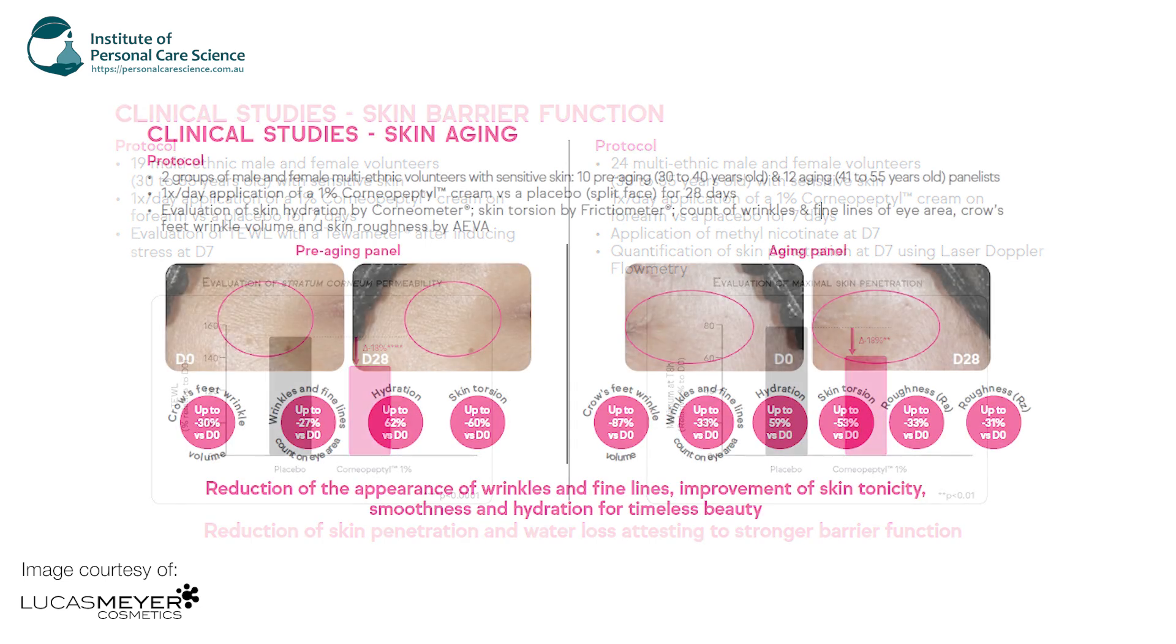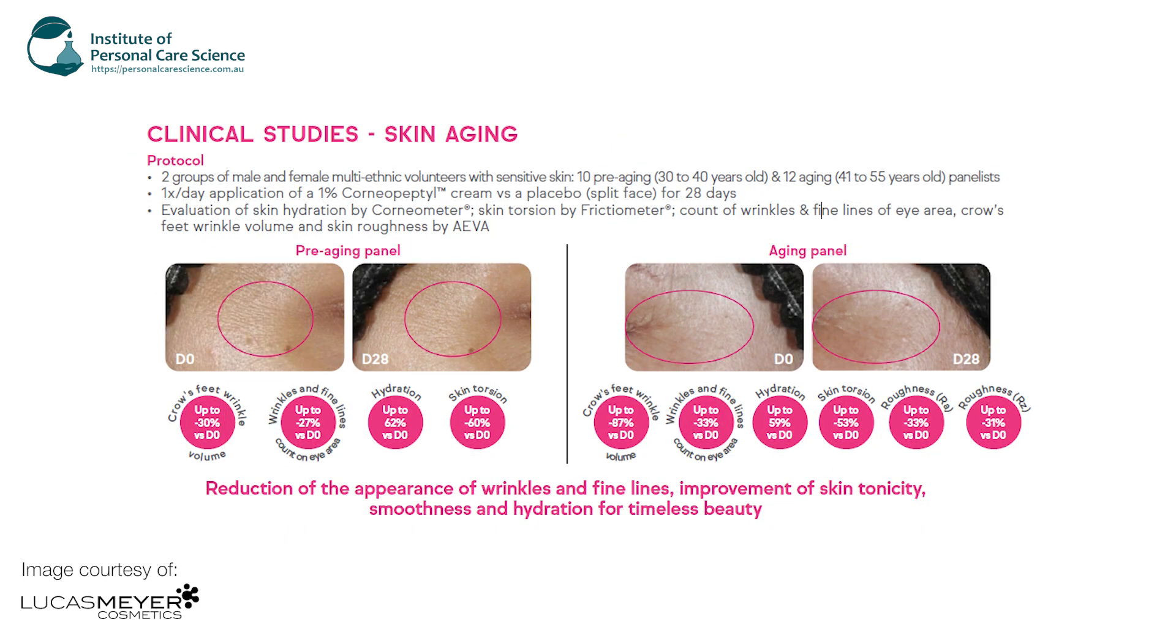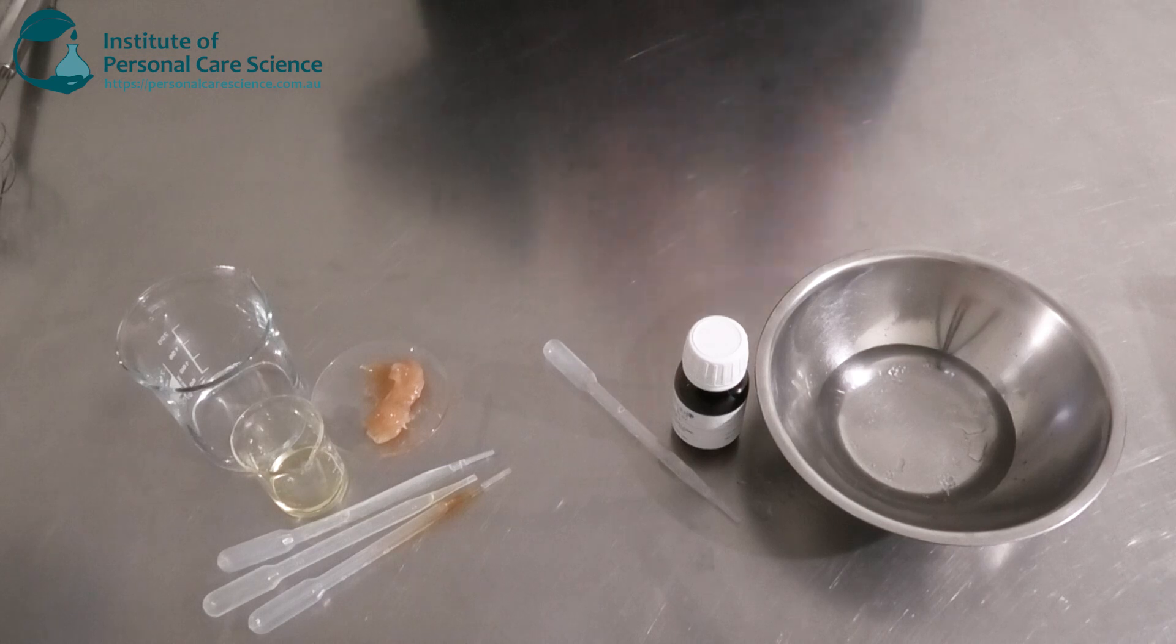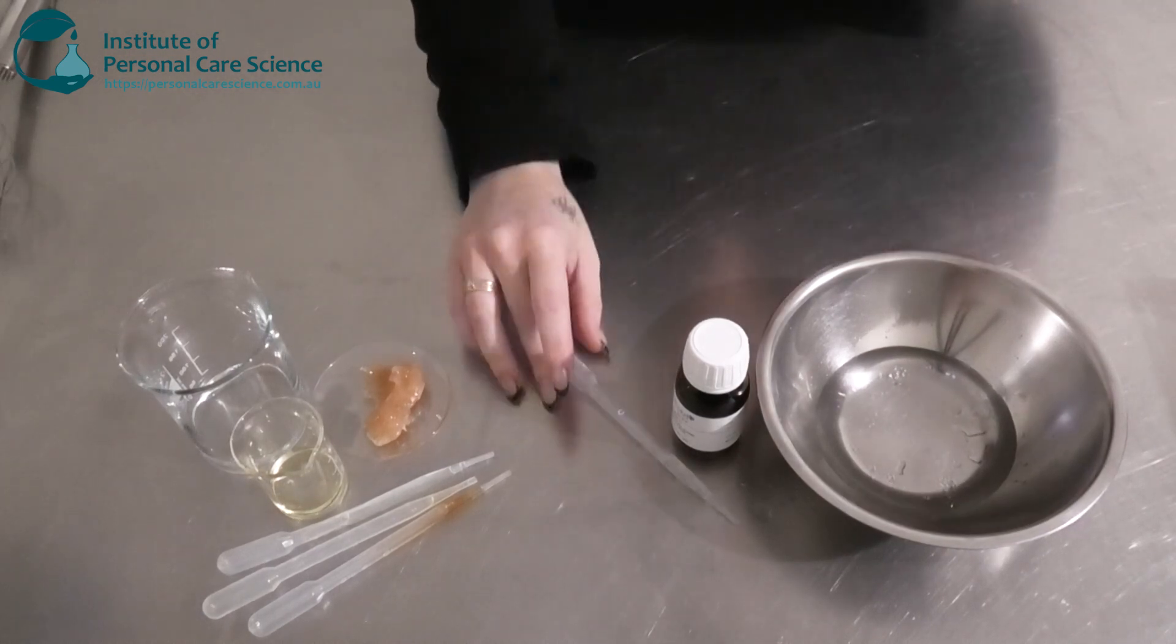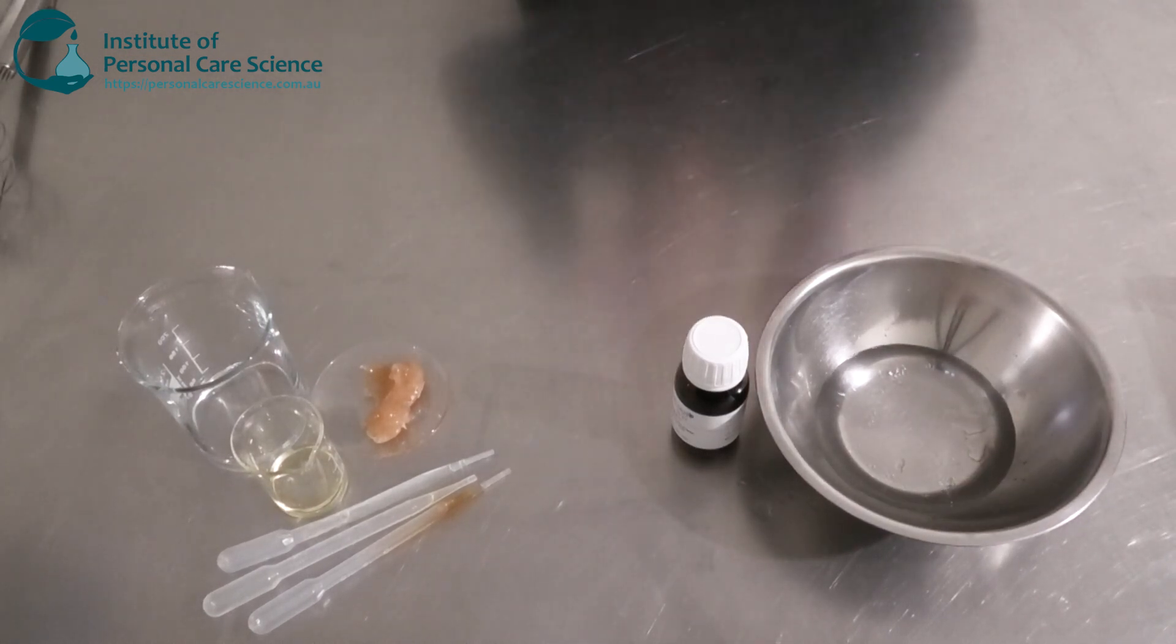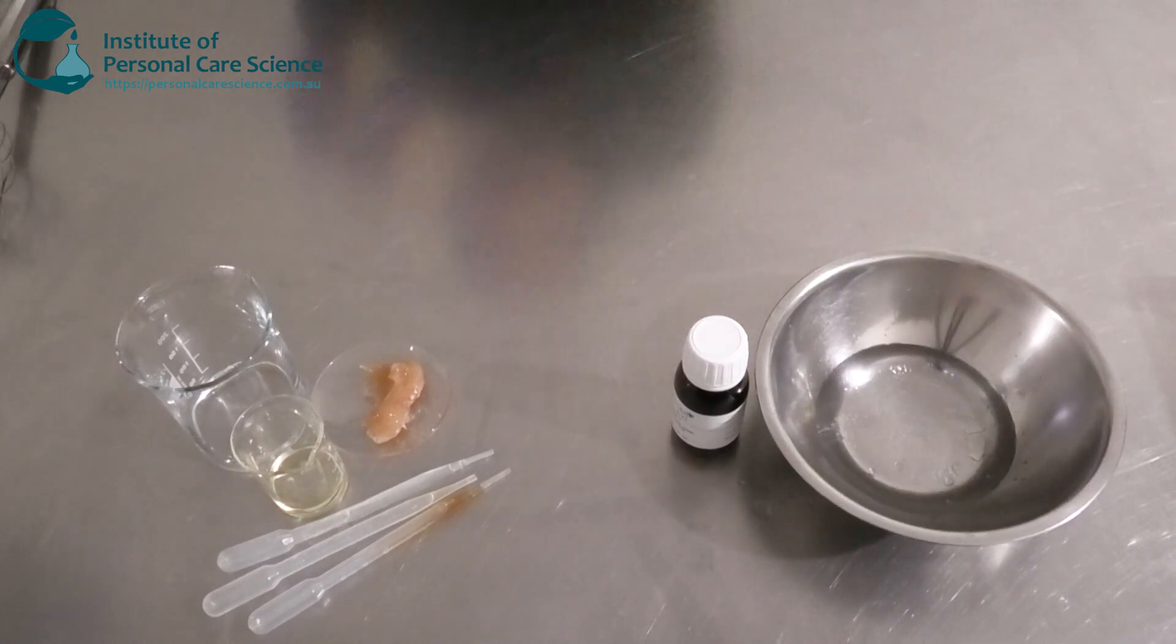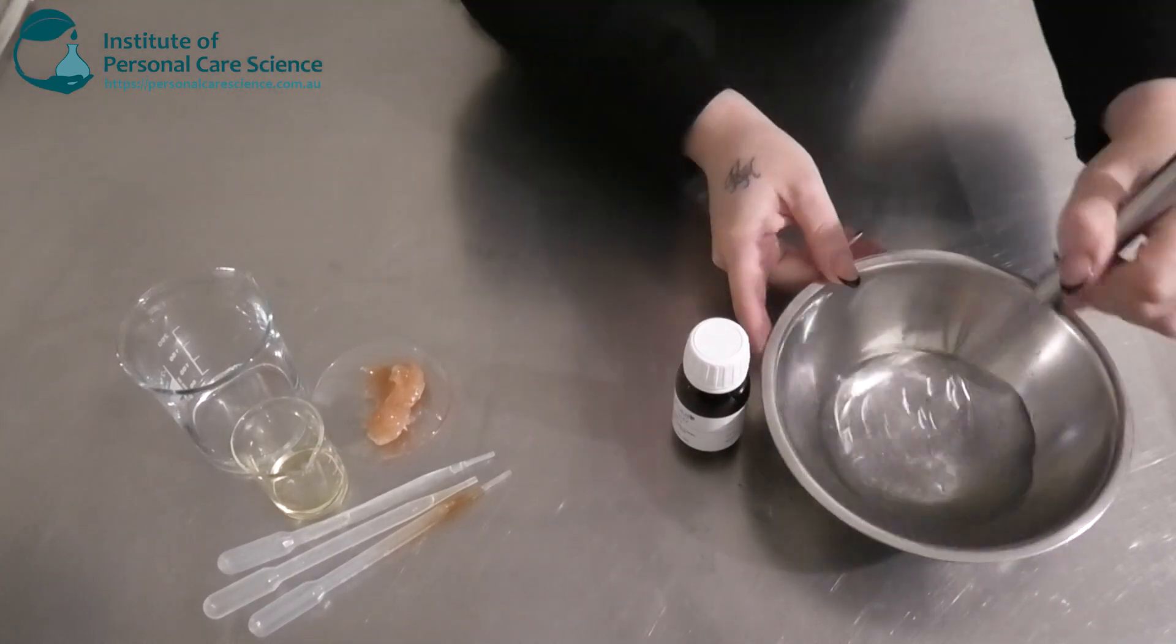And then you can also see another clinical study on skin aging. So you can see the fine lines in the crow's feet area has significantly decreased as well. So really good active there. So it's got a few benefits. It's got the skin barrier. It's protecting the skin from transepidermal water loss. And it's also got some anti-aging benefits there as well. So I'm just going to give that one a stir. Okay. So now heading over to my oil phase here.